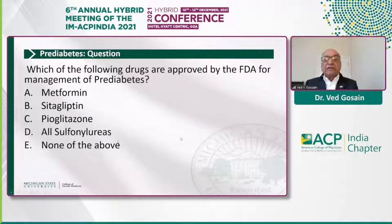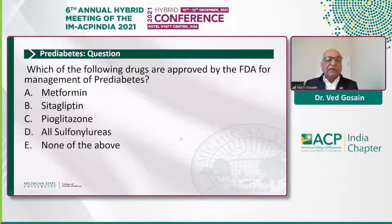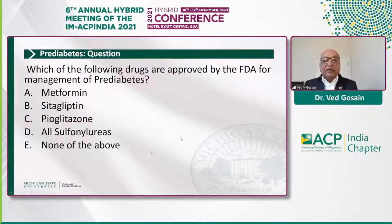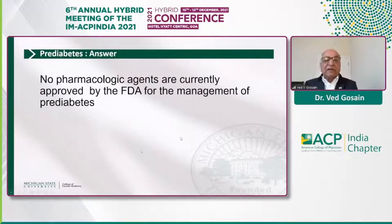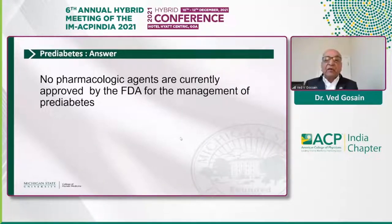Which of the following drugs are approved for the management of pre-diabetes — metformin, sitagliptin, pioglitazone, acarbose, or none of the above? The answer is none of the above. At the present time, no pharmacological agents are currently approved by the FDA for management of pre-diabetes, although they can be used off-label.